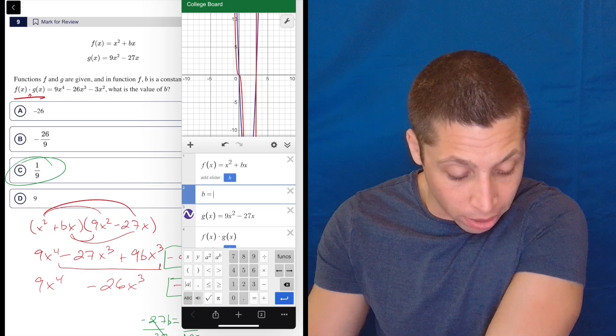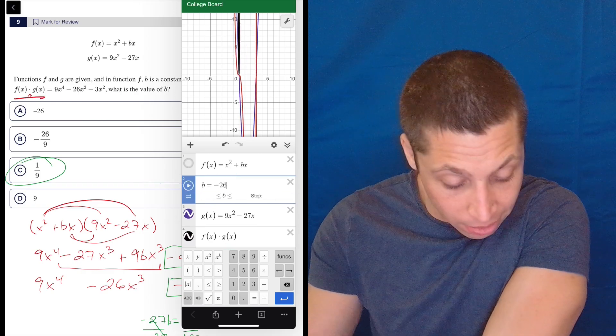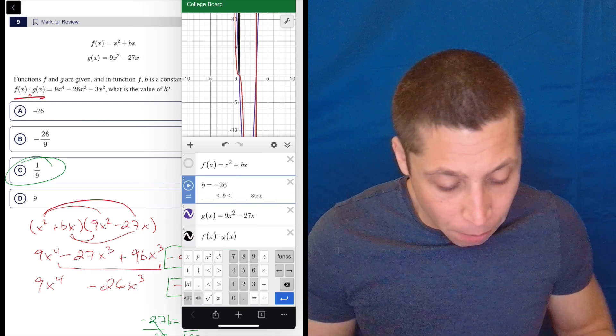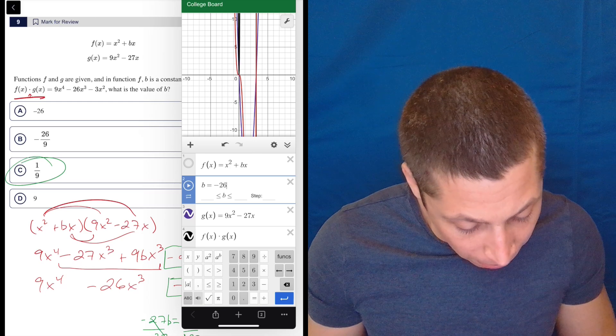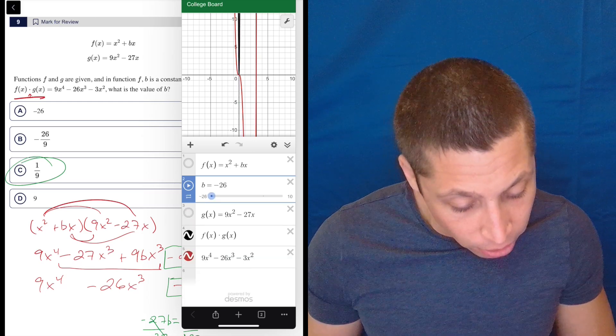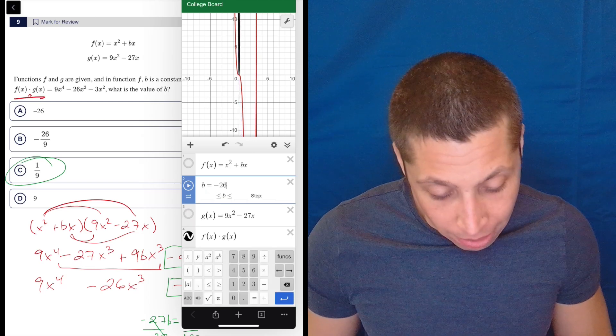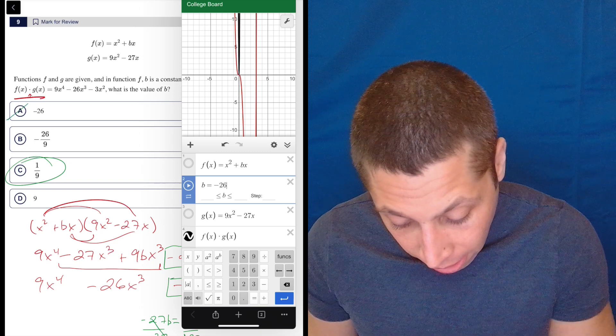So basically, I'm just going to try to do the different b's. So I could do negative 26. And I see, again, they don't line up, the black and the red are completely different. So okay, that's clearly wrong, right? I'd cross that out.